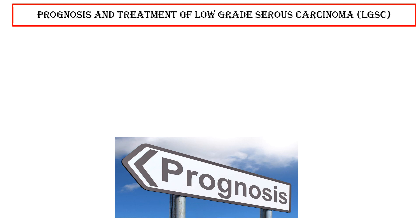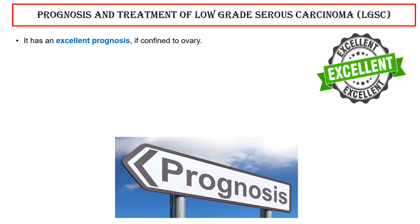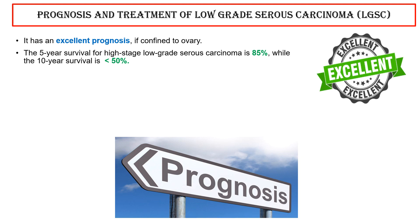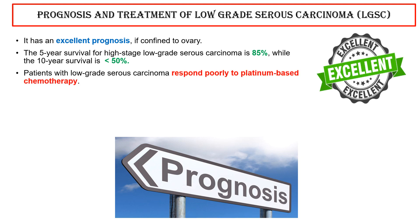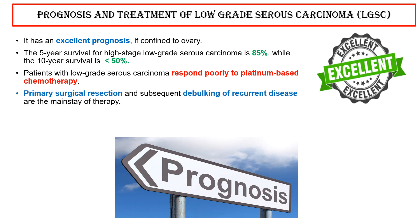Prognosis and treatment of low-grade serous carcinoma: It has an excellent prognosis if confined to the ovary. The five-year survival for high-stage low-grade serous carcinoma is 85%, while the 10-year survival is less than 50%. Patients with low-grade serous carcinoma respond poorly to platinum-based chemotherapy. Primary surgical resection and subsequent debulking of recurrent disease are the main stay of therapy.